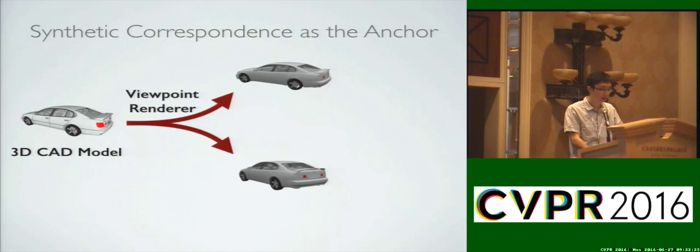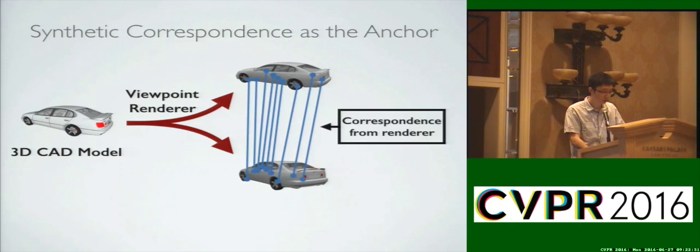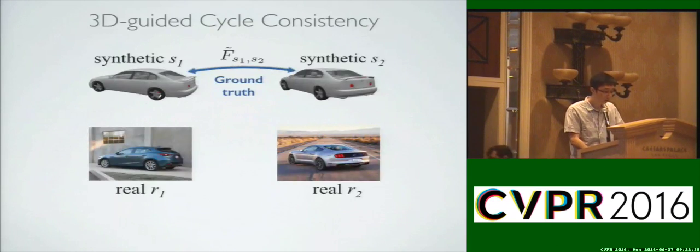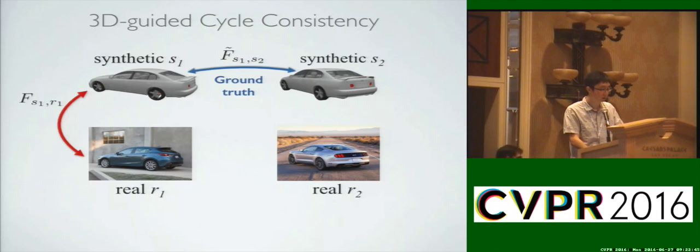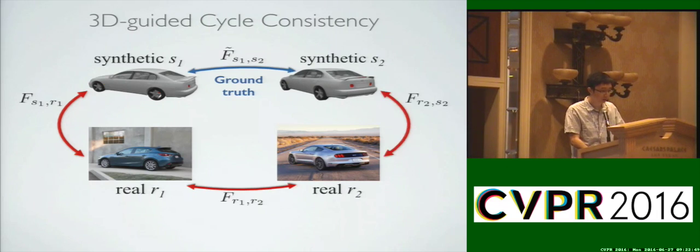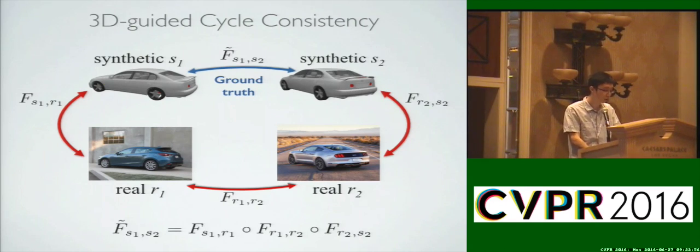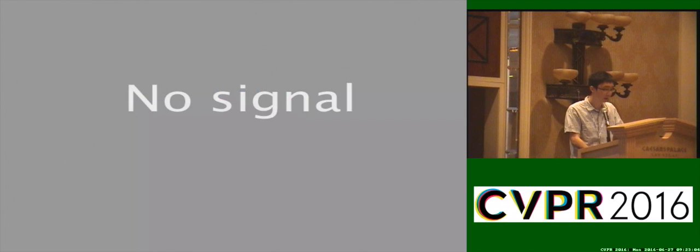We take the anchor edge for cycle consistency training. To obtain non-trivial ground truth correspondence, we tie the long edge of the cycle to synthetic correspondence, and transfer the real-to-synthetic ground truth along the path of the cycle. The composition of flow fields is done by accumulating the flow vectors from one image to the next, and is differentiable through bilinear interpolation. We then formulate the training objective as minimizing the pixel distance between the synthetic ground truth flows and the transitive flows predicted by the CNN.